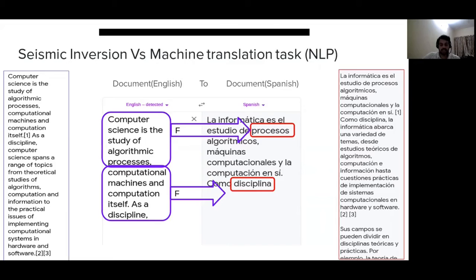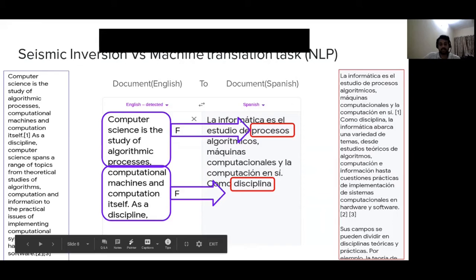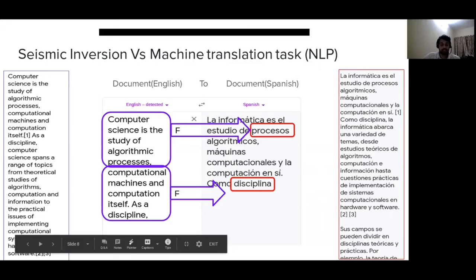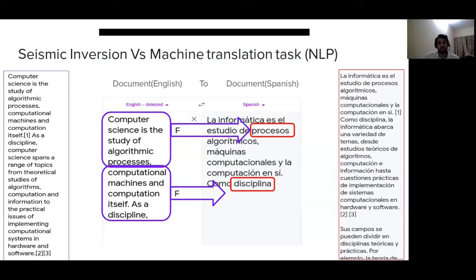Let us look at the machine translation task in NLP and how it is solved, then relate it back to seismic inversion. Machine translation in NLP is basically to take a big document as input and translate it into another language. If you think about finding a single function f which can map from document one to document two, it is probably going to be a computationally hard problem.